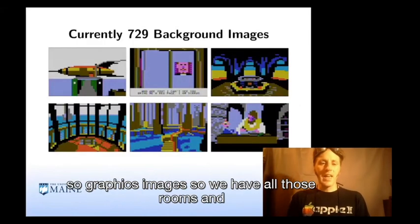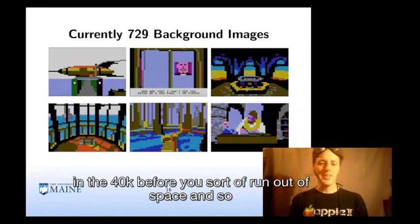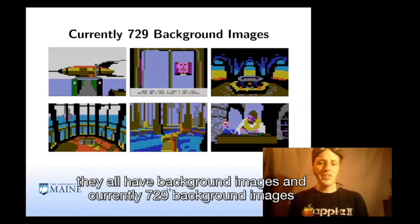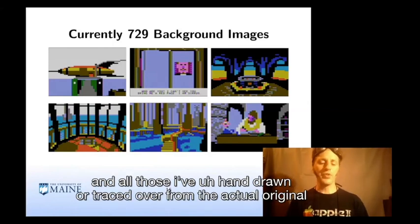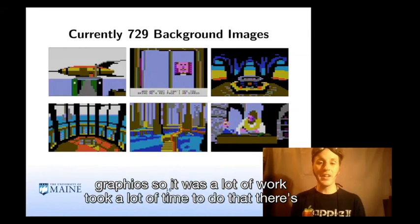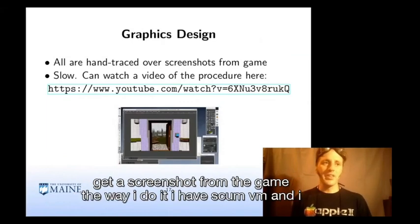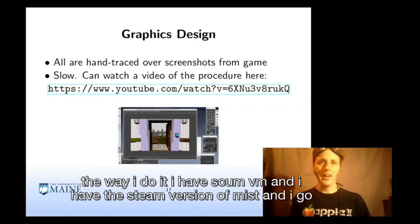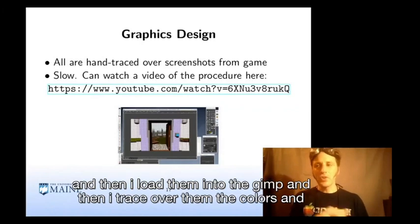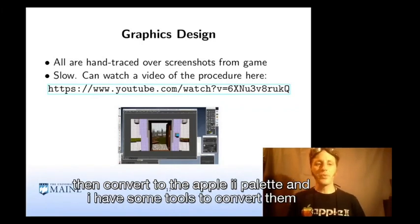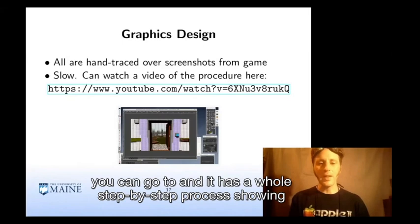Graphics images: we have all those rooms, and you can fit about 40 rooms in the 40K before running out of space. All rooms have background images — currently 729 background images — and I've hand-drawn or traced all of them over from the actual original graphics. So it was a lot of work; it took a lot of time. Here's the design process: I get a screenshot from the game — I use ScummVM and the Steam version — grab the screens I want, load them into GIMP, trace over them with the colors, then convert to the Apple II palette using some custom tools. There's a YouTube video showing the whole step-by-step process if you're interested.